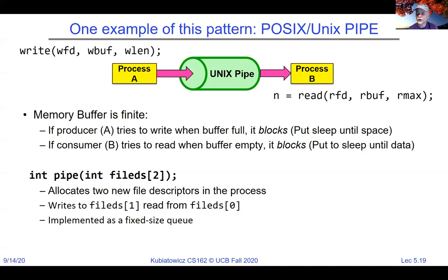How do we know if there's data in the pipe — do we have to poll? No: if process B is reading and there's no data, it goes to sleep. The kernel knows when process A writes because A executed the write system call. The pipe is just memory in kernel space, not a separate process. When process A writes, the kernel puts the data into the pipe and checks whether there's a read waiting — if so, it just wakes it up. The kernel knows when B needs to be woken up and when A needs to be woken up.